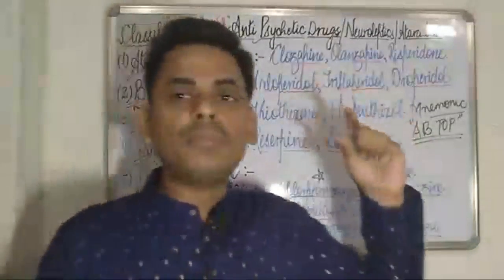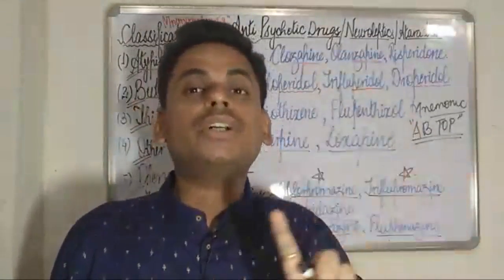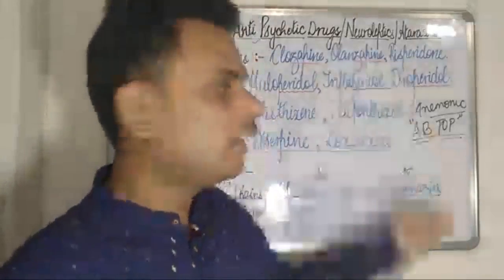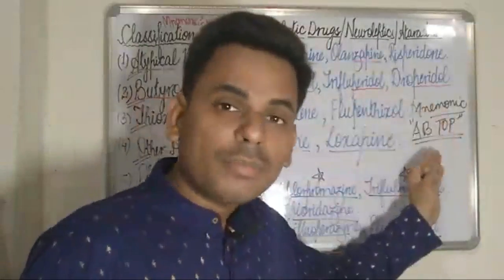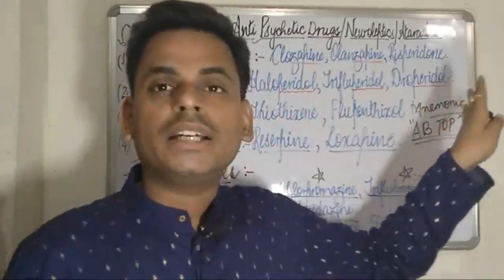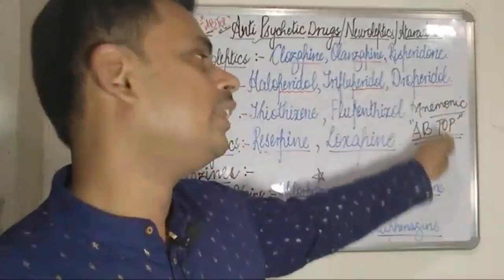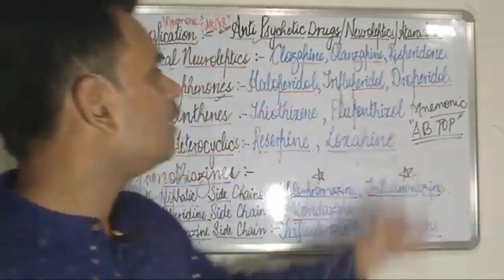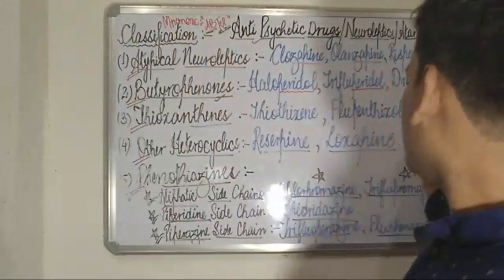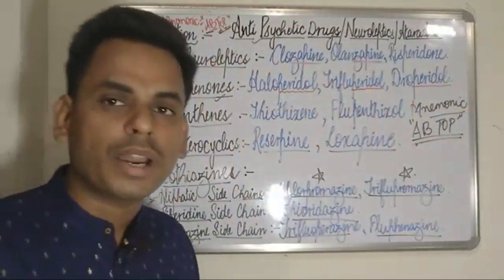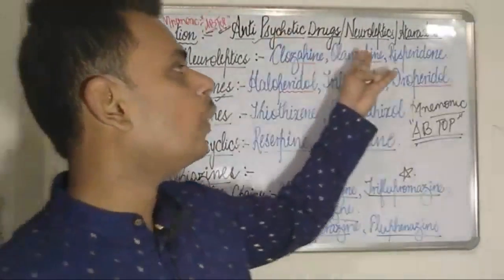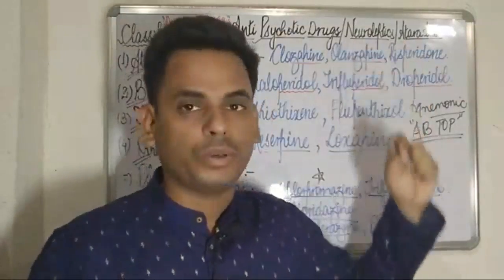Since the alphabets A and B are the topmost letters of the alphabetical series, beginning with the classification: the first letter A of ABTOP refers to the atypical neuroleptics. Under this category we have the very famous drugs — clozapine, olanzapine, and risperidone.